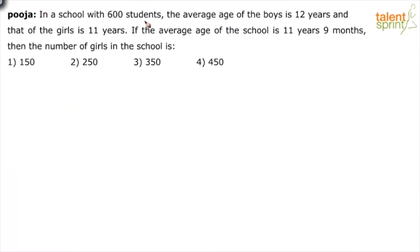In a school with 600 students, the average age of the boys is 12 years and that of the girls is 11 years. If the average age of the school is 11 years and 9 months, then the number of girls in the school is?